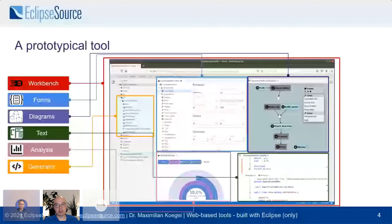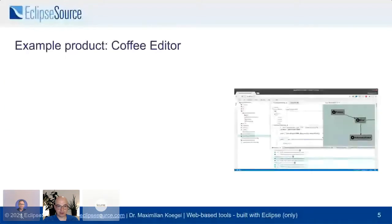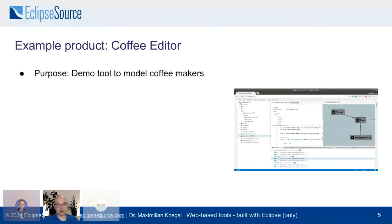Once you've entered data into the tool, you want to do something with it — analyze it or run a simulation — so you need to be able to create views for that. And often you also generate other artifacts from the data with generators: documentation, resulting configuration files for production, or source code, which is also very common. Along the presentation I'm going to use one example product, the coffee editor — a demo tool to model coffee makers. I'll always show the feature first in the actual tool, then explain how it was implemented and with which frameworks and architecture.